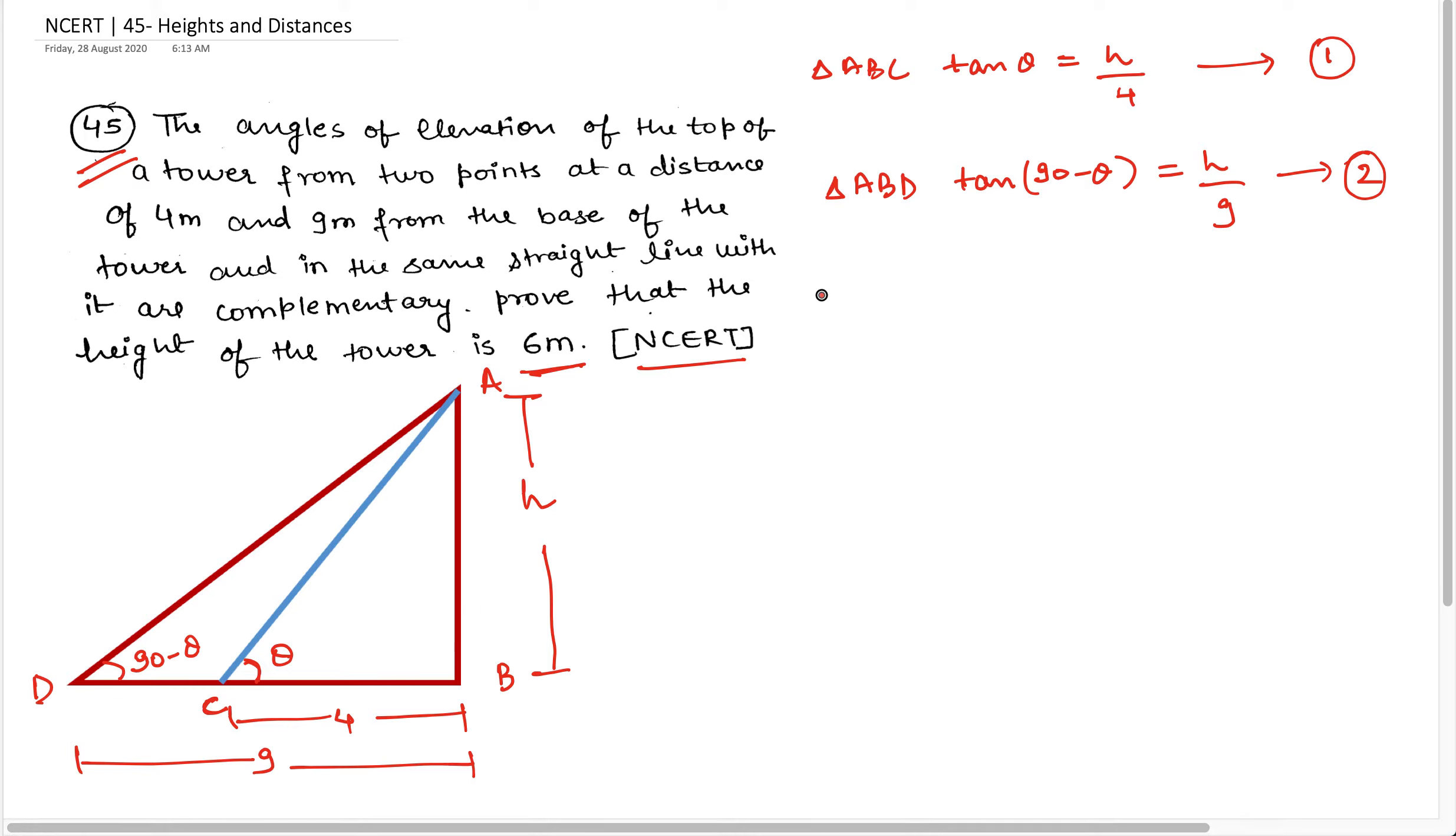Now, let's multiply both equations. When you multiply 1 and 2, what do you get? On the LHS, you get tan theta multiplied by tan of 90 minus theta is equal to h upon 4 into h upon 9.